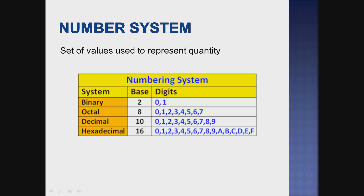So, base — what is the meaning of that particular base? Base is nothing but it is used to classify what type of number it is. So base 2 is binary. Base 8 is octal. Base 10 is decimal. And base 16 is hexadecimal.